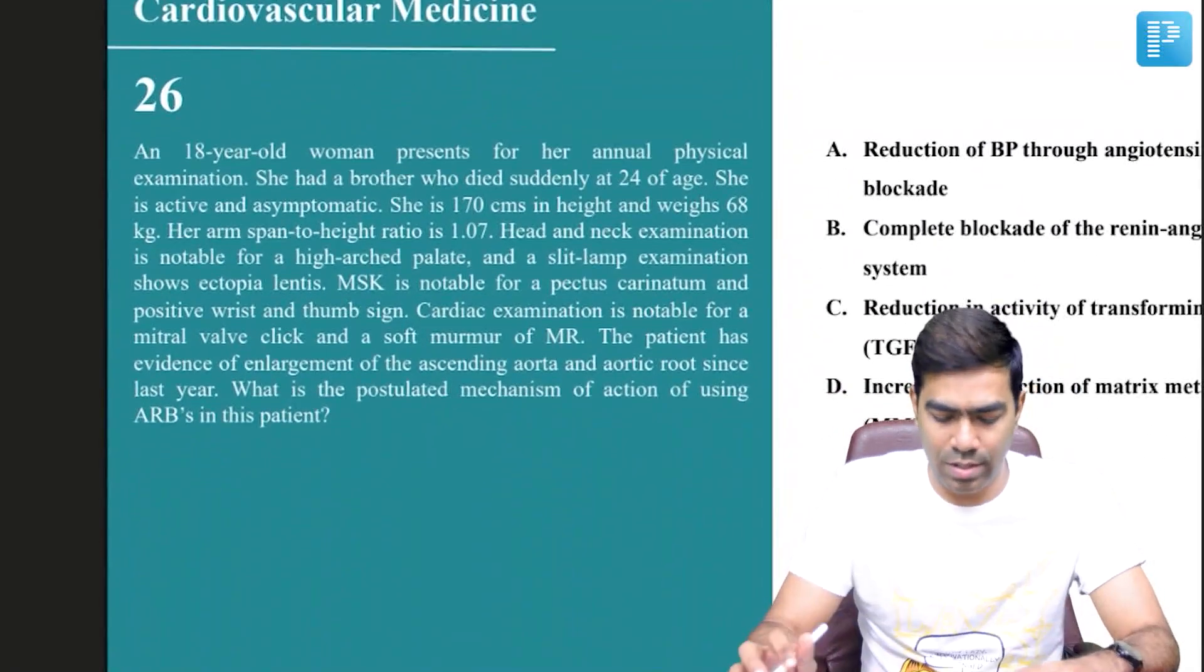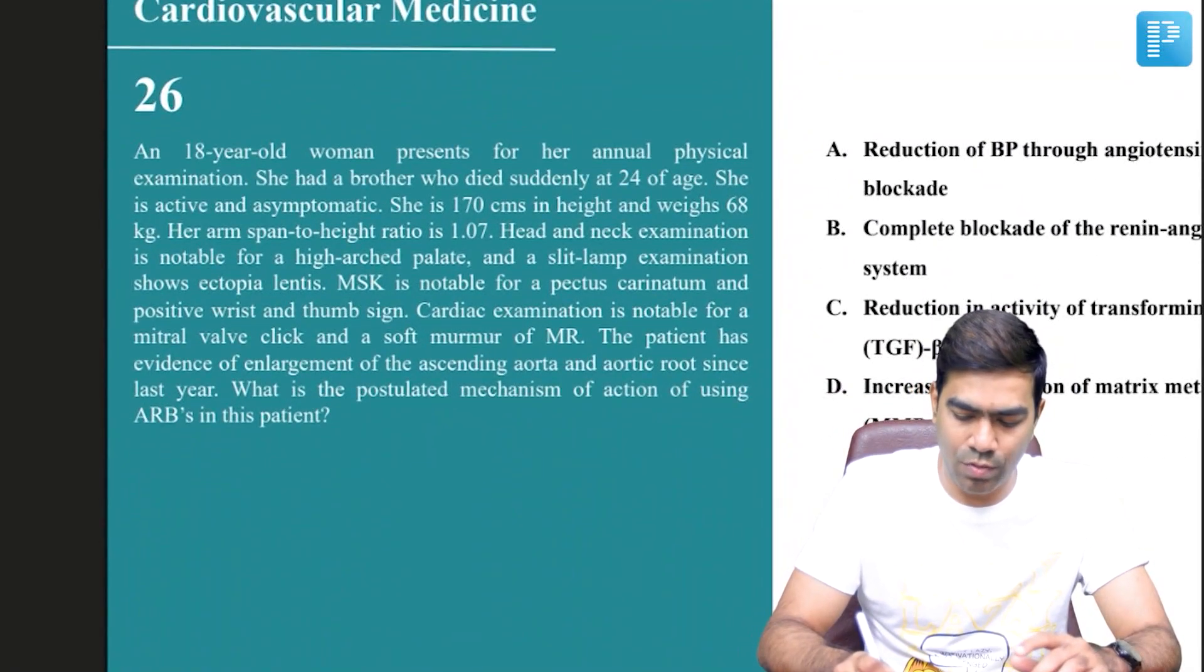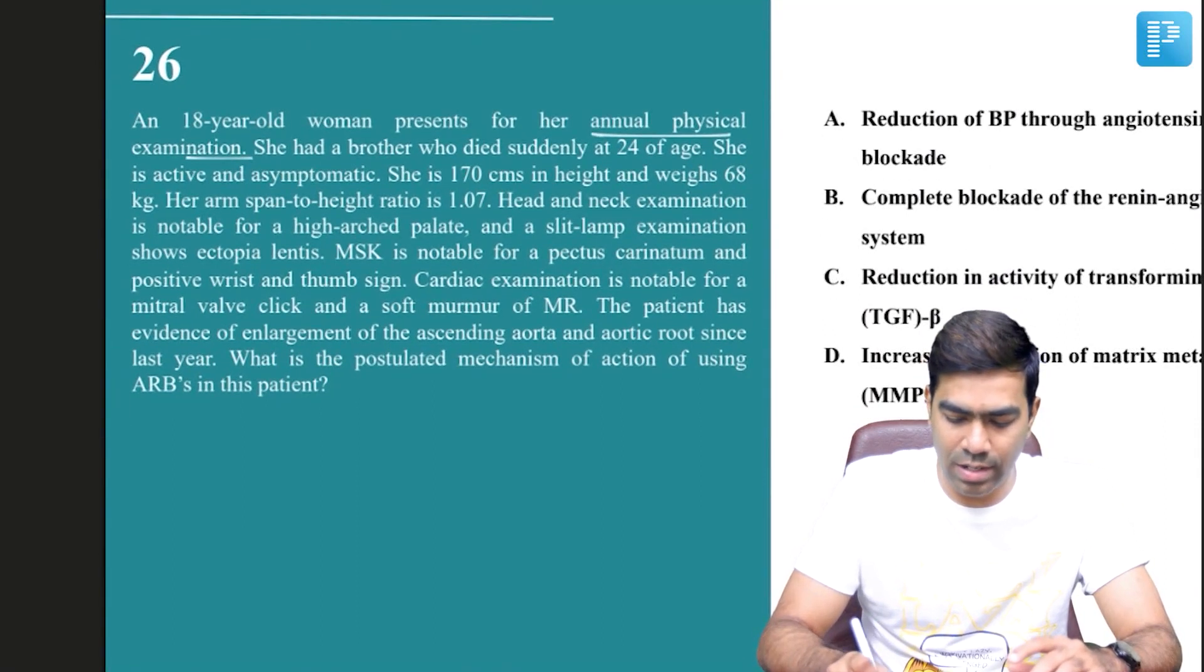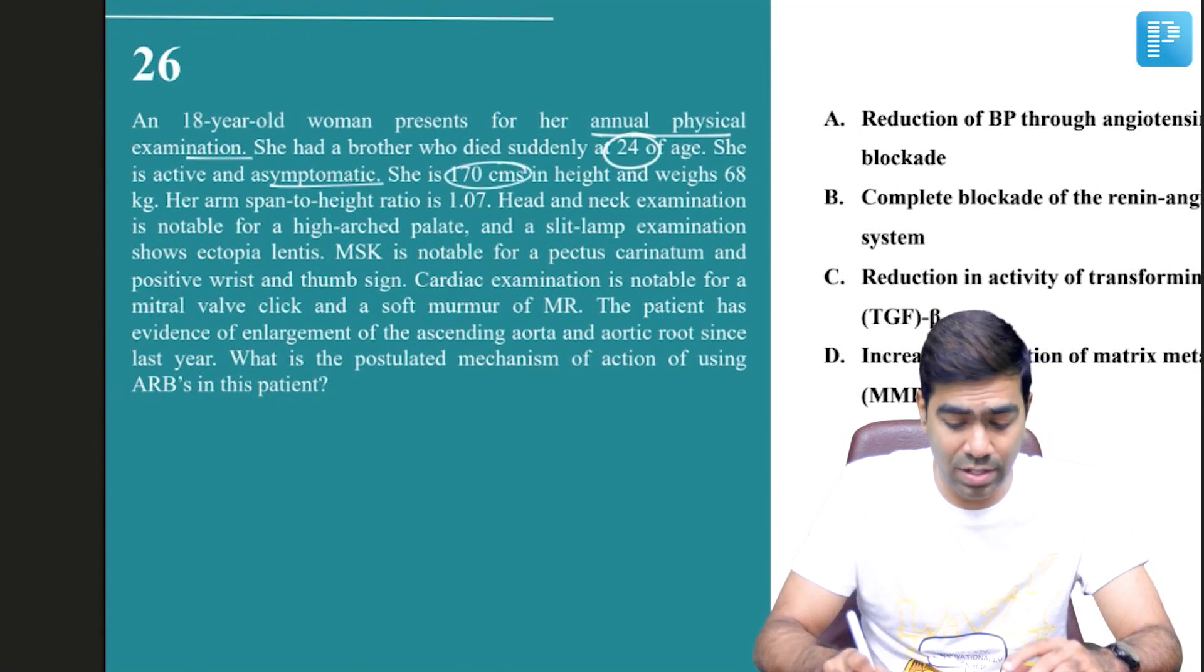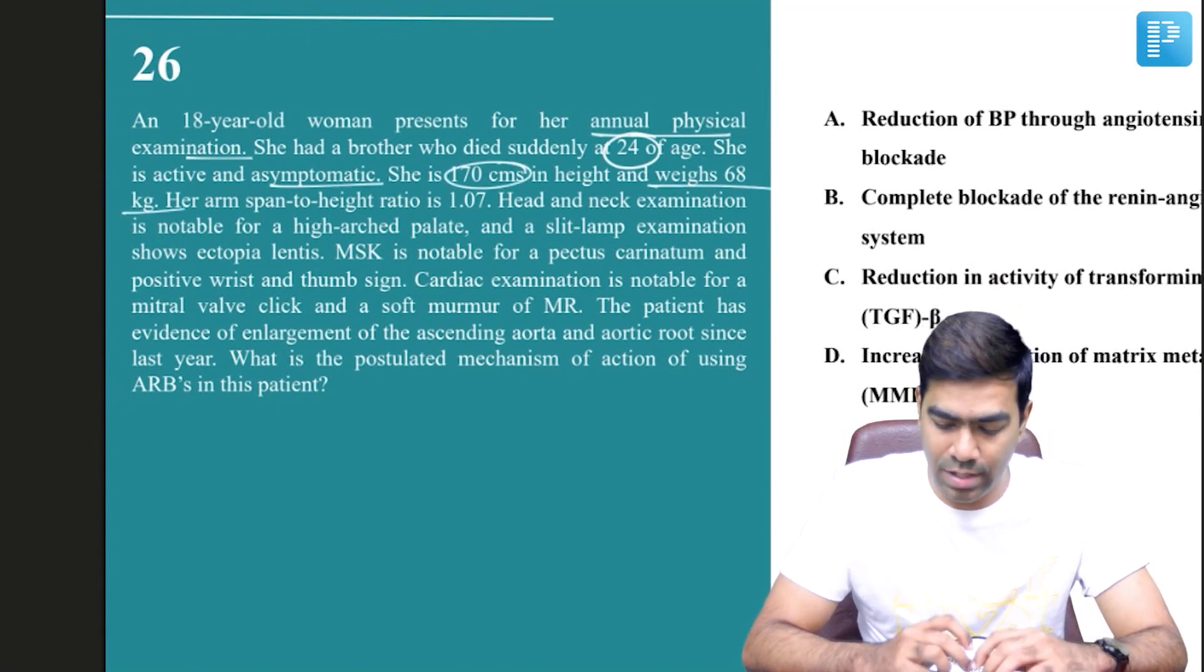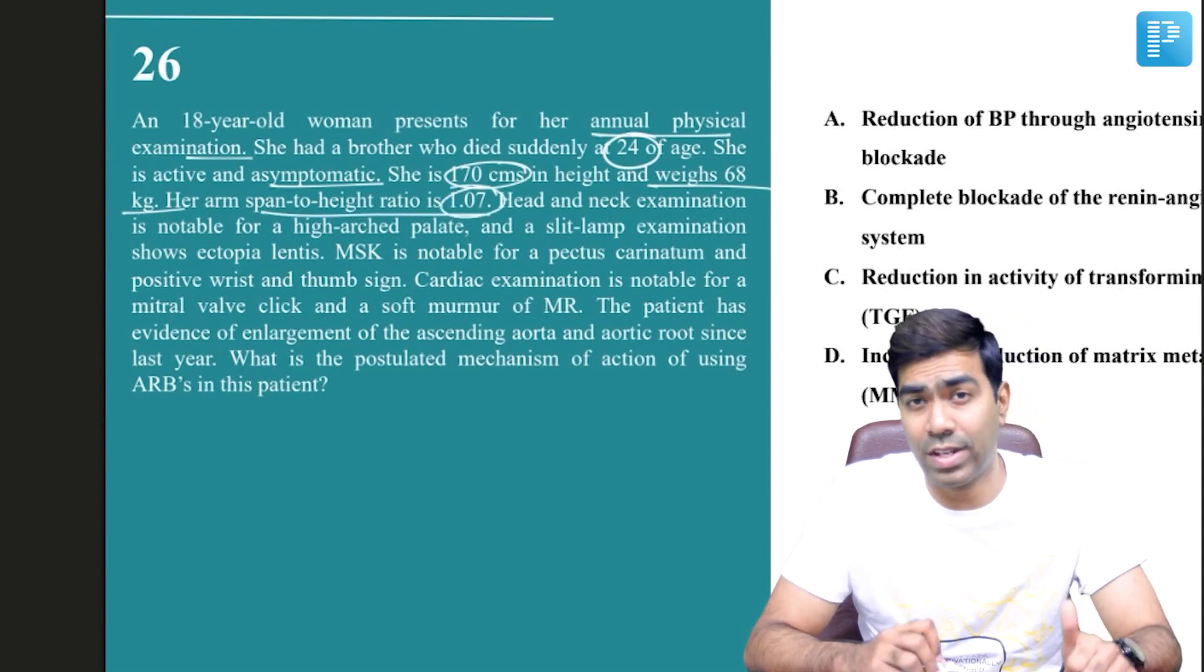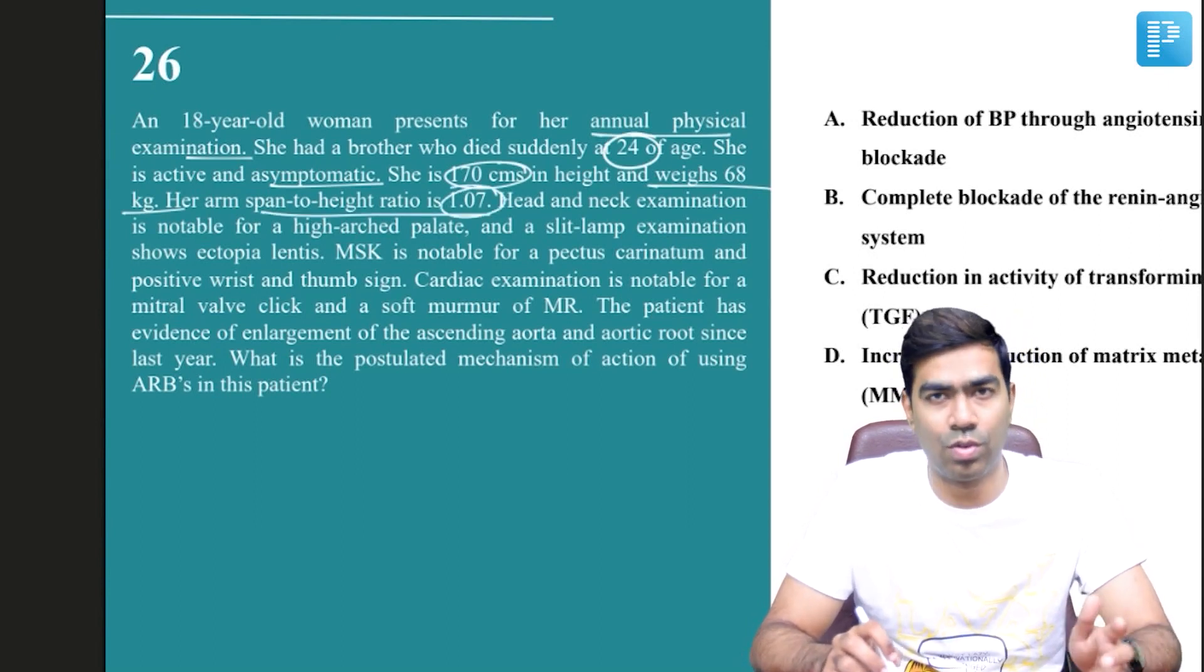Coming to question 26: an 18-year-old woman presents for her annual physical examination. She had a brother who died suddenly at age 24. She is active and asymptomatic, 170 cm in height, 68 kg in weight. Her arm span to height ratio is 1.01—anything more than 1.04 is suggestive of Marfan syndrome.